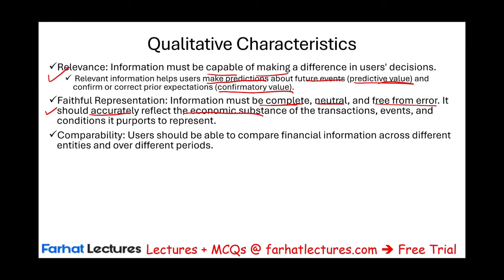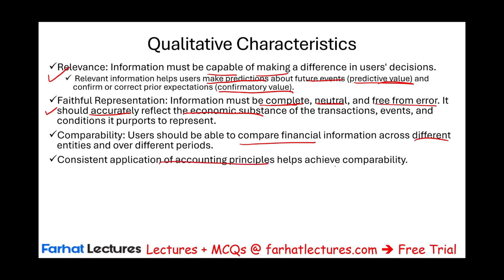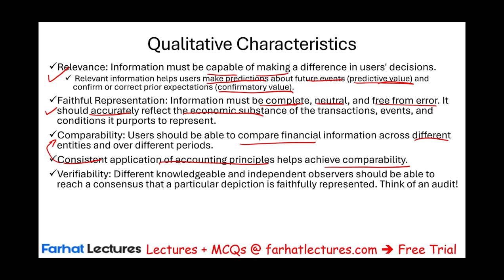The information has to be comparable. Users should be able to compare financial information across different entities over different periods, because investors have a menu of companies to choose from. Consistency means using the same accounting principles to achieve comparability. If the information is consistent from period to period, then it's comparable across companies. The information also has to be verifiable — different knowledgeable and independent observers should be able to reach a consensus that a particular depiction is faithfully represented. Think of an audit: if you bring two auditors, they should come to the same conclusion because the rules are consistent and comparable.